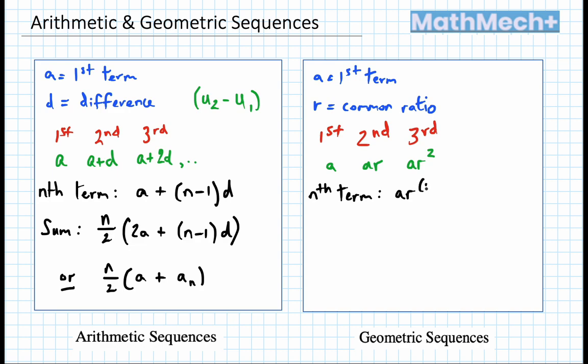Ar, we'll just fill a bracket here, n minus 1. And then we have, I suppose, two sums. The sum of a sequence, a geometric sequence.